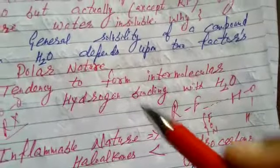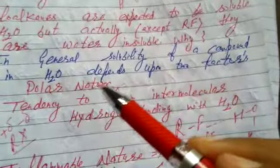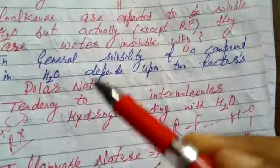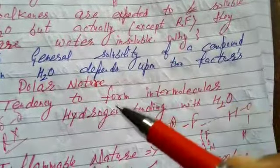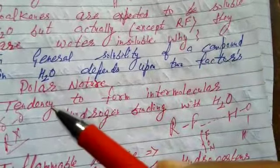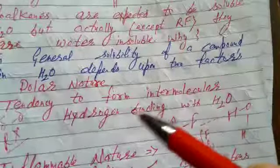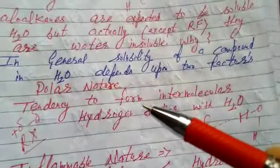After this, we will write, haloalkanes are expected to be soluble in water because of their polar nature, but actually they are water insoluble because haloalkanes except fluoroalkanes don't possess any tendency to form intermolecular hydrogen bonding with water. Please complete this in detail.